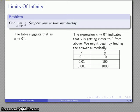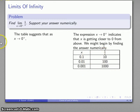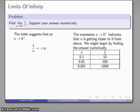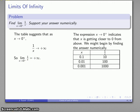It might not be entirely clear what's happening, but here's the algebraic argument: if x is getting close to zero, then x is a small number, and one over a small number is a large number. So as x gets close to zero from above, 1/x goes to larger and larger values — we say it goes to positive infinity. The limit as x approaches zero from above of 1/x is plus infinity.